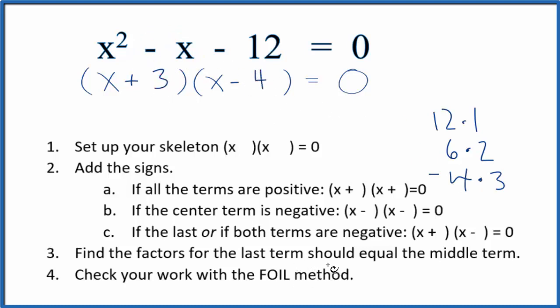And now we can check our work with the FOIL method. First term, outside, which is -4x, plus the 3x, that's the inside, and then 3 times -4 is -12, that gives us 0. And if